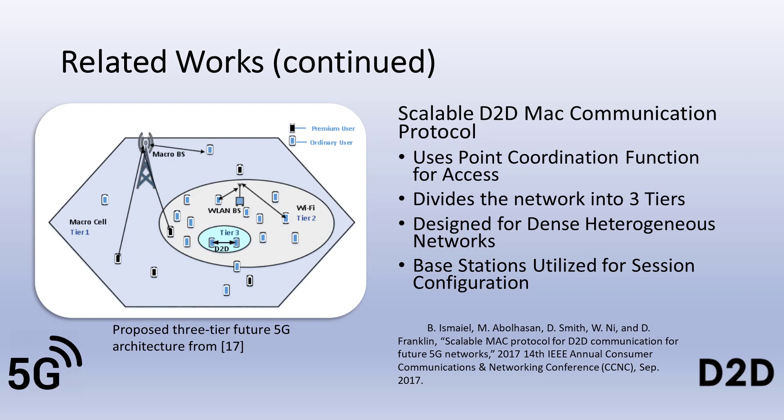In the paper "Scalable MAC Protocol for D2D Communications for Future 5G Networks," Ismail et al. propose a new approach to D2D communications and present a scalable MAC protocol based on the point coordination function access mechanism. The researchers divide 5G communication into three tiers in dense heterogeneous networks. Tier 1 is the legacy LTE cellular network covering traditional communications from a cell tower. Tier 2 is a dense heterogeneous network using a WLAN base station to connect to the 5G cell tower. Tier 3 has very close D2D communication between two devices without any type of base station. The point coordination function access mechanism is a polling-based scheme designed to check channel conditions and connect users with the best possible coverage.